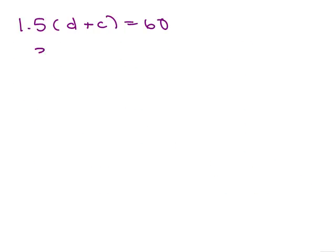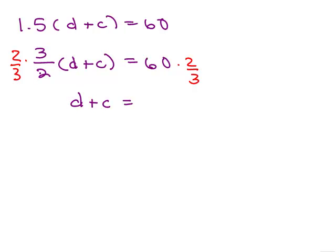I like to think of that 1.5 as 3 halves and then multiply by the reciprocal which is 2 thirds and that way I end up with just the d plus c on this side because the fractions cancel.